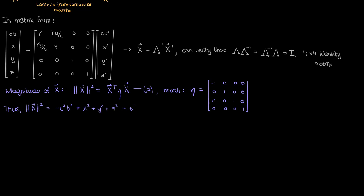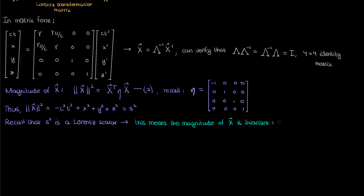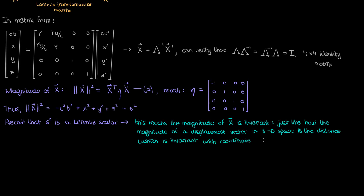You're probably familiar with this as the spacetime interval s squared. The first important point is that the spacetime interval is a Lorentz scalar — it is invariant under Lorentz transformations like we went over in the previous video. Observers in all inertial reference frames agree on the value of the spacetime interval between two events, even if they don't agree on the values of the individual components. What this means is that the magnitude of my displacement four vector is an invariant quantity. This should make sense using the analogy of three-dimensional space, where the magnitude of a displacement vector — the distance — should not change if you change your coordinate system. The same logic applies in four-dimensional spacetime.